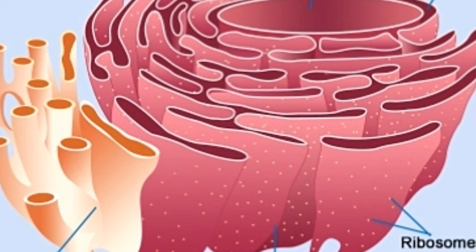Though smooth endoplasmic reticulum CER does not take part in protein synthesis like rough endoplasmic reticulum, it plays an important role in protein transportation. It regulates the transportation of proteins by acting as a transitional area for vesicles that transfer proteins to various locations. CER also transports the products of RER to the Golgi apparatus and other parts of the cell.